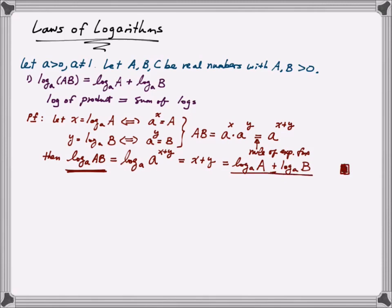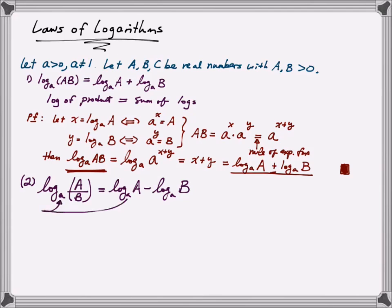Mathematicians use a small square at the end of a proof to indicate the proof is finished. The second rule says that the log of a quotient A over B is the same as the log of A minus the log of B, with the same base throughout. Notice that this has to be the same base in every single expression. This is because the base a must be greater than 0 and not equal to 1, since we're translating logarithm language into exponential language, and the base in an exponential function must be non-zero, not equal to 1, and strictly greater than 0.